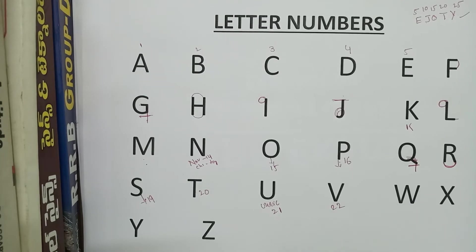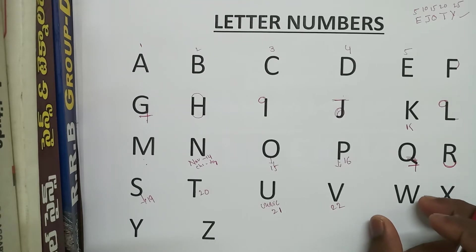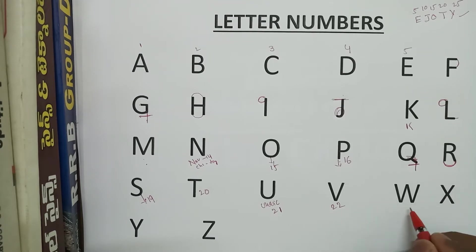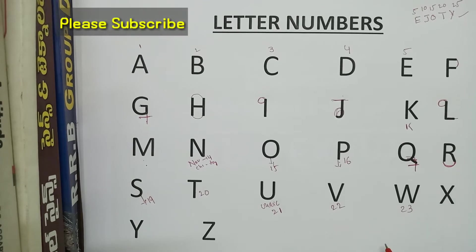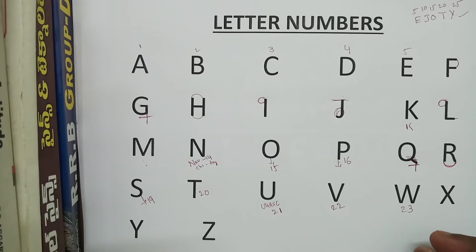W code is 23 — W is an anti-clockwise rotated M, and M=13, so W=23. So W code is 23.